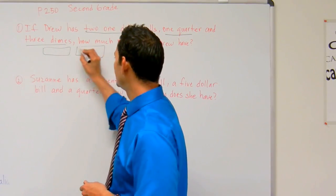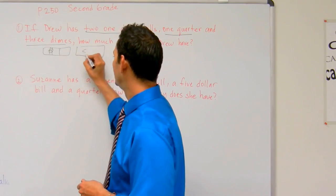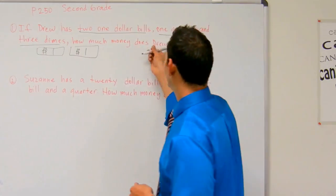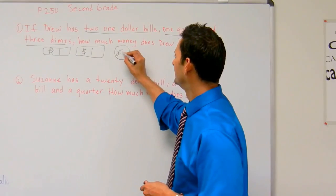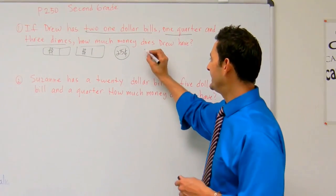He's got two one dollar bills, he's got one quarter, and he's got three dimes.